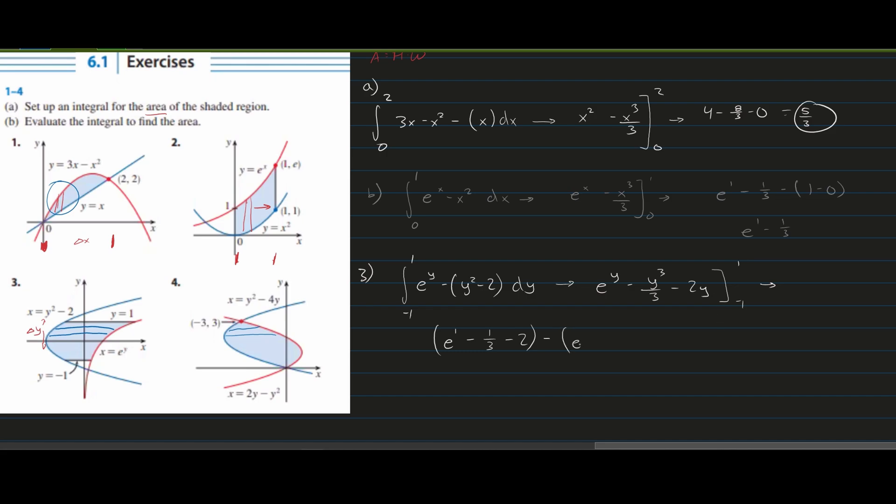In the lower one we're going to have e to the negative 1, which also can be written as 1 over e. We have a minus negative 1 cubed, that's just going to be a plus 1 over 3. Then we have negative 2 times negative 1, that's just going to give us plus 2. We can plug all this into a calculator and get our answer. But just for time's sake we're going to skip that and move on to number 4.